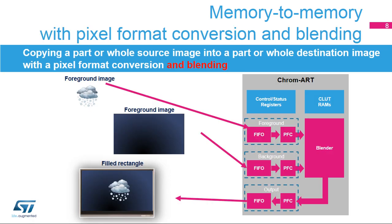Memory to memory mode with pixel format conversion and blending is used to blend a part or whole source image with a part or whole destination image with a different pixel format. This is widely used to draw bitmap icons having transparency or fonts.